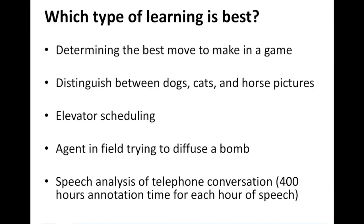Different situations require different types of machine learning algorithms, and not every algorithm is applicable for every situation. Consider determining the best move to make in a game — you don't know what moves are coming, and you cannot change past moves. Reinforcement learning generally works best here because there are many ways a game can be played, and you want your agent to adapt according to the responses it receives and learn from past mistakes.